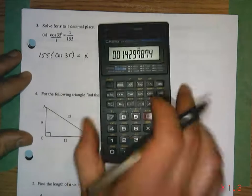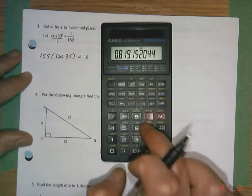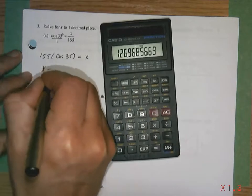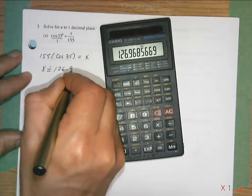So taking my calculator, 35 cosine, that's that decimal, times 155 equals x equals approximately 126.96.